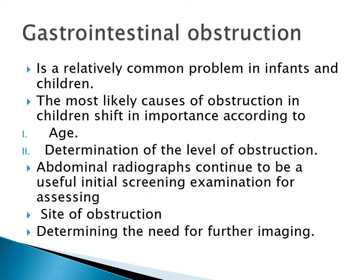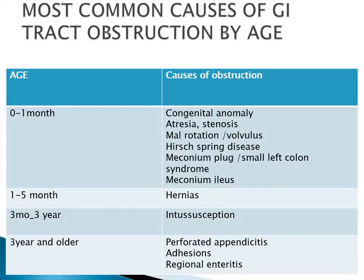Abdominal radiographs continue to be a useful initial screening examination for assessing the site of obstruction or determining the need for further imaging. Most common causes of GI tract obstruction according to age: 0 to 1 month - congenital anomalies such as atresia, stenosis, malrotation, volvulus, Hirschsprung's, meconium plug syndrome or meconium ileus. 1 to 5 months - hernias are common. 3 months to 3 years - intussusception. 3 years and older - perforated appendicitis, adhesions, regional enteritis.